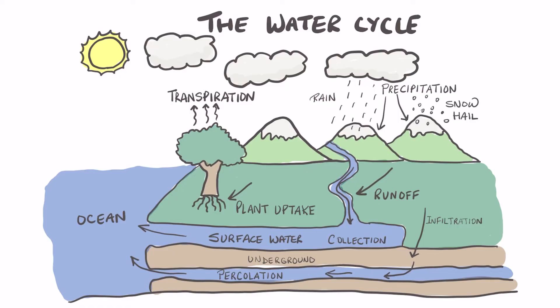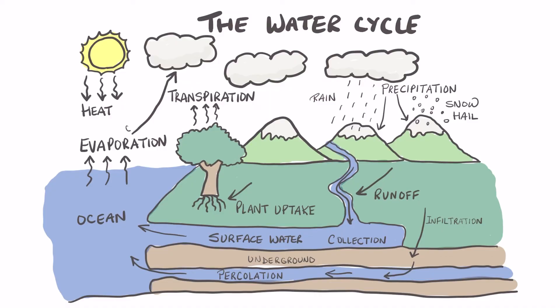And the wind, along with the heat from the sun, heats up the water in the ocean and causes evaporation of a large percentage of the water, which then condenses and forms clouds. The clouds then release the water in the form of precipitation, and the process continues on again in a cycle.